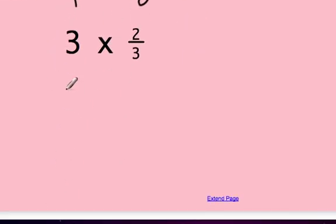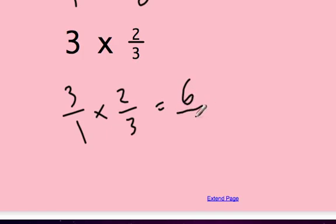This one here, same thing, but 3 over 1. 3 over 1 times 2 over 3. And we'll end up with, looks like 3 times 2 is 6, and 1 times 3 is 3. So that's 6 over 3, or another way of saying 6 over 3, 6 divided by 3, equals 2.